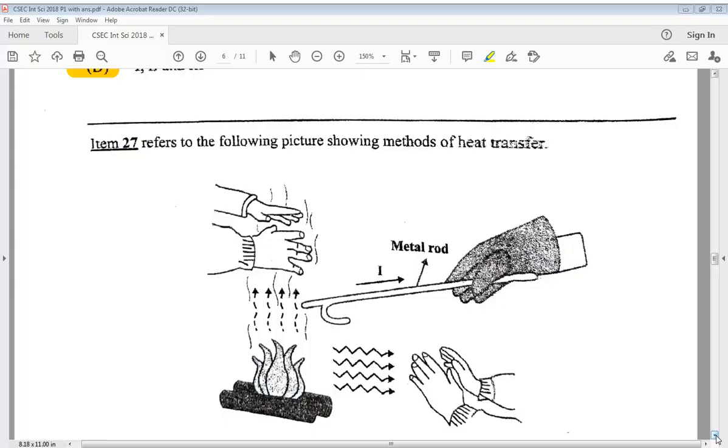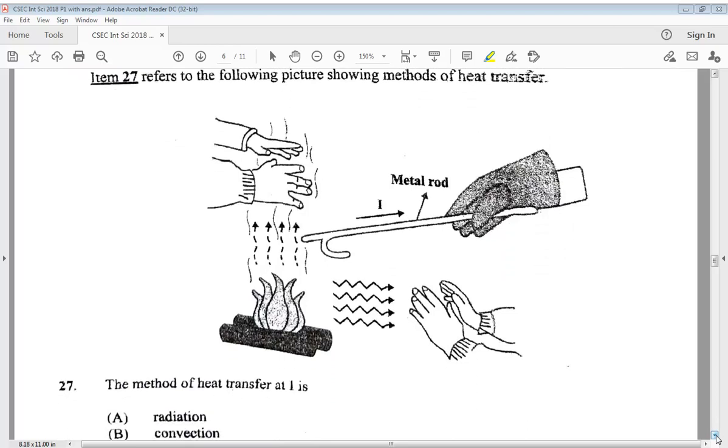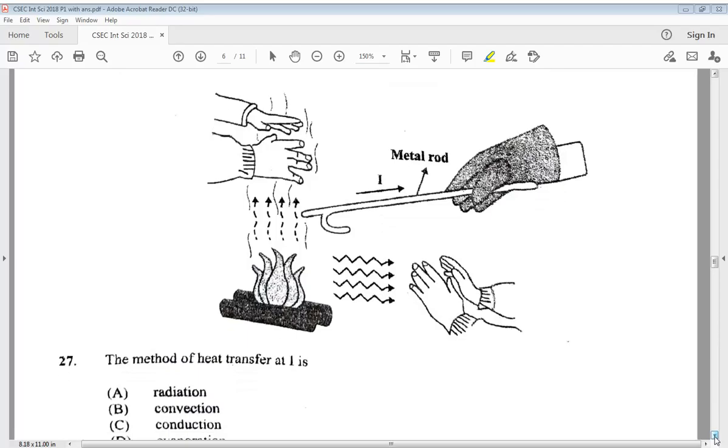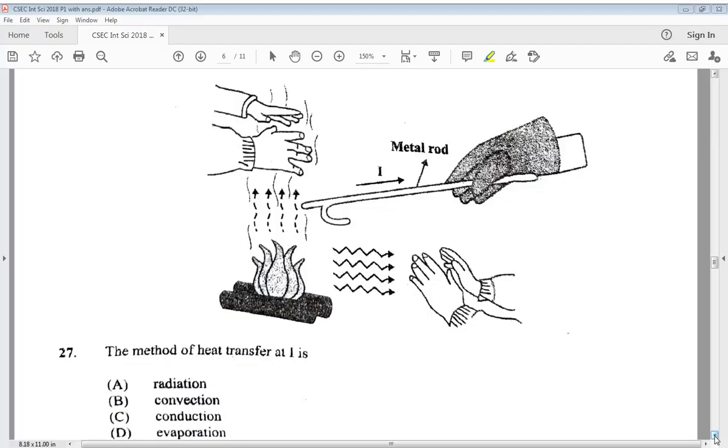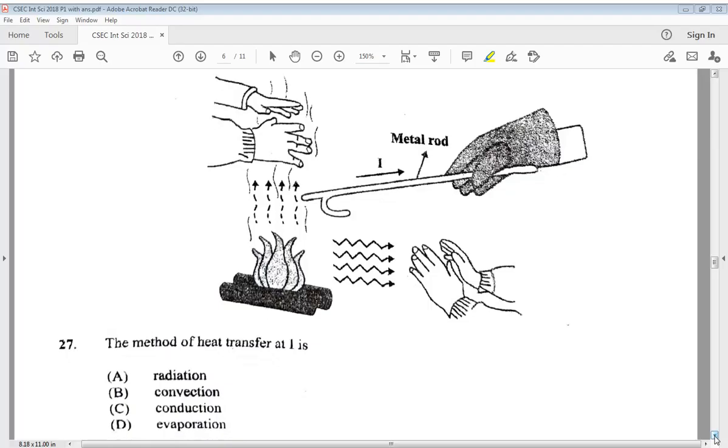27. Item 27 refers to the following picture showing methods of heat transfer. So we are asked in 27, it says the method of heat transfer at 1, which is here, as you can see, is it A, radiation, B, convection, C, conduction, or D, evaporation. So we know that it is C, conduction.